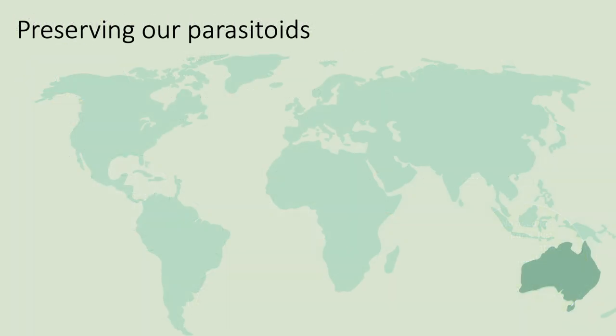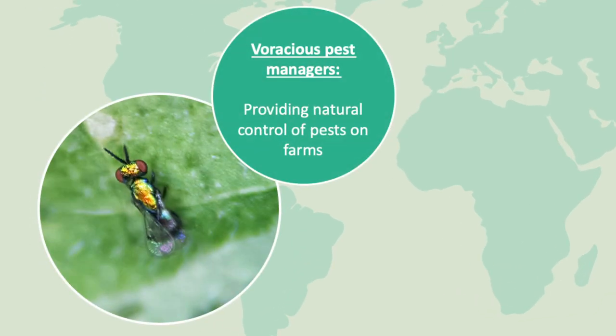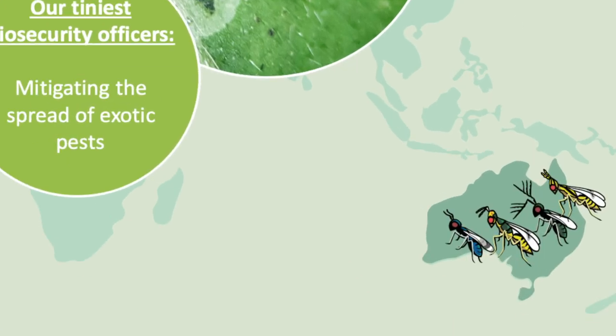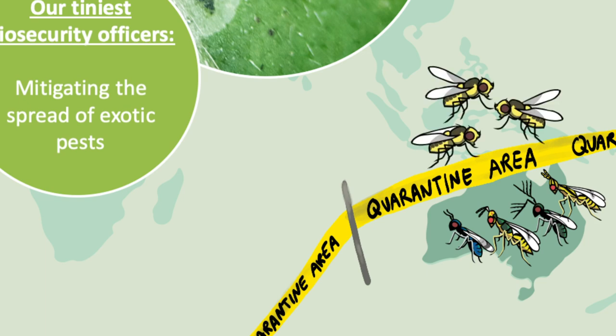We already know from looking at stories overseas that predators like these parasitoid wasps are voracious pest managers and key components within integrated pest management plans. But this project has also taught us that predators like these wasps can also act like tiny biosecurity officers, slowing the spread of exotic pests. We hope that by building more awareness for this pest and its parasitoid wasps, we can ensure our wasp communities are preserved, meaning we will be ready should the vegetable leaf miner ever establish in our growing regions.